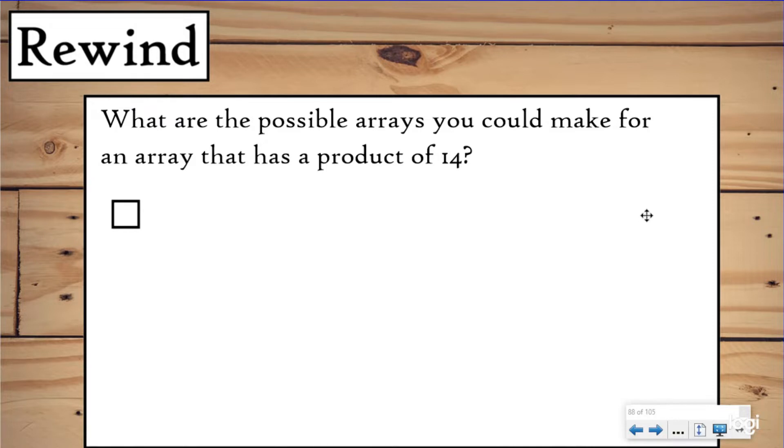But before we do that, we need to rewind back to when we learned about products and factors. This question is asking you, what are the possible arrays you can make for an array that has a product of 14? You want to make an array with 14. What are the different ways you could do it? So what I think about first is what are the factors of 14? And I'm going to write those down using a factor rainbow. The first factors I always know about are one times itself. So I have one and 14. Now I know 14 is an even number, so I can also do two and seven.